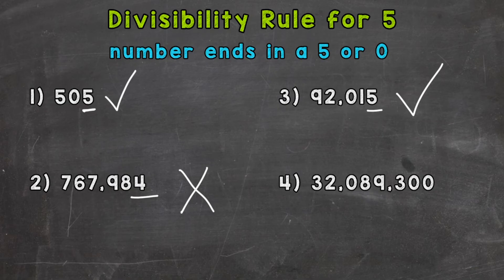And lastly, number four, we have 32,089,300. That number ends in a 0. That means it is divisible by 5.